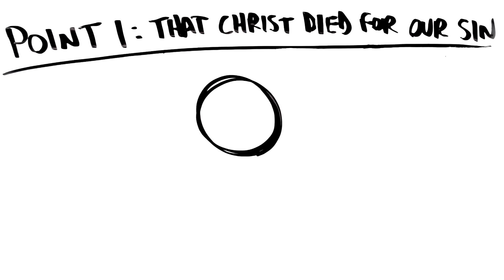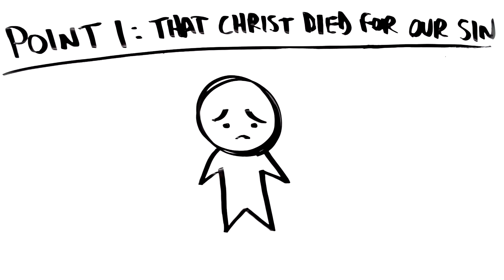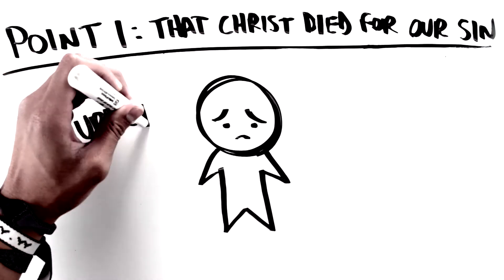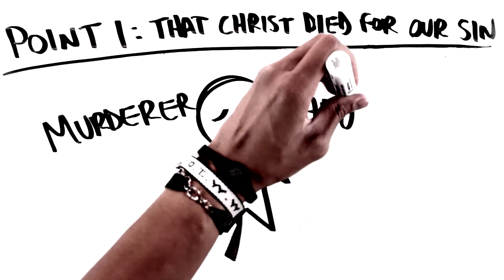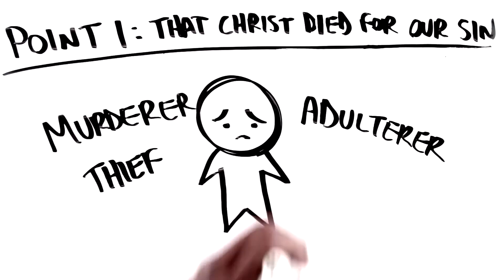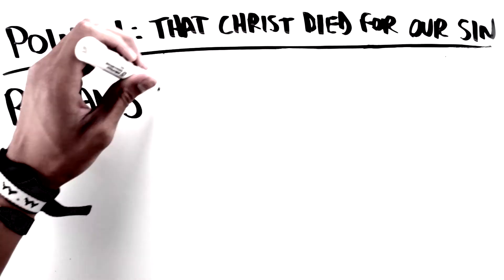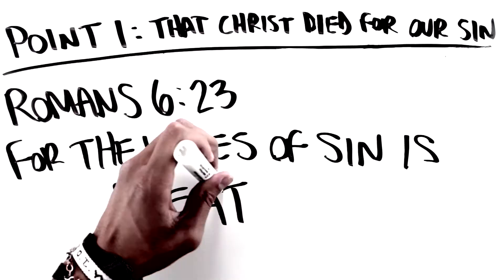So if you're honest with yourself, we have all in a way broken all of these commandments. In God's eyes, we are murderers because we've killed in our heart. We are adulterers because we've lusted in our heart, and are thieves and liars deserving of justice. Romans 6:23, For the wages of sin is death.